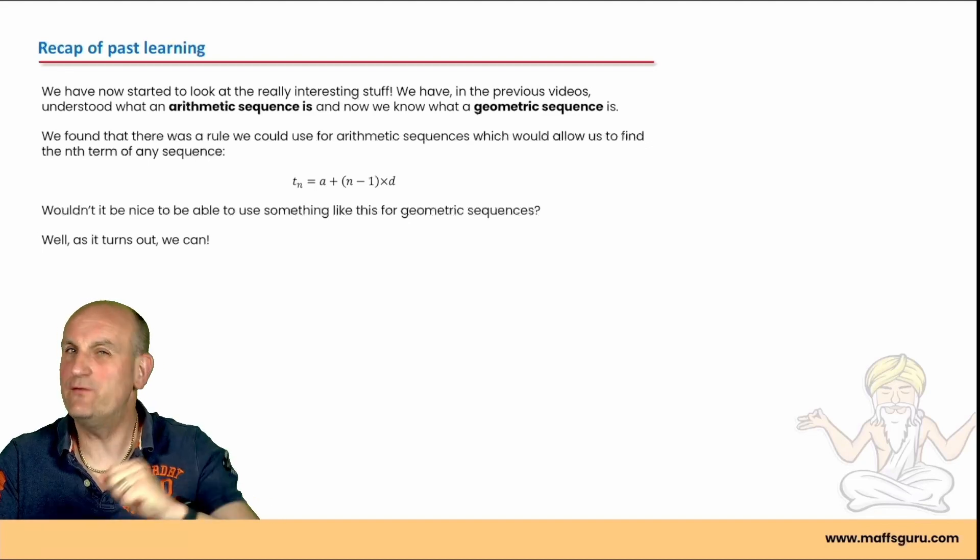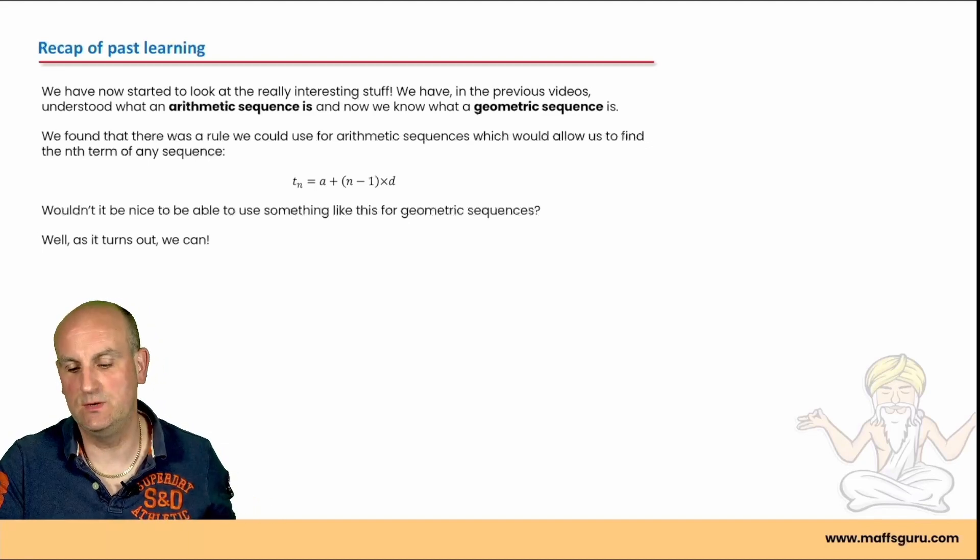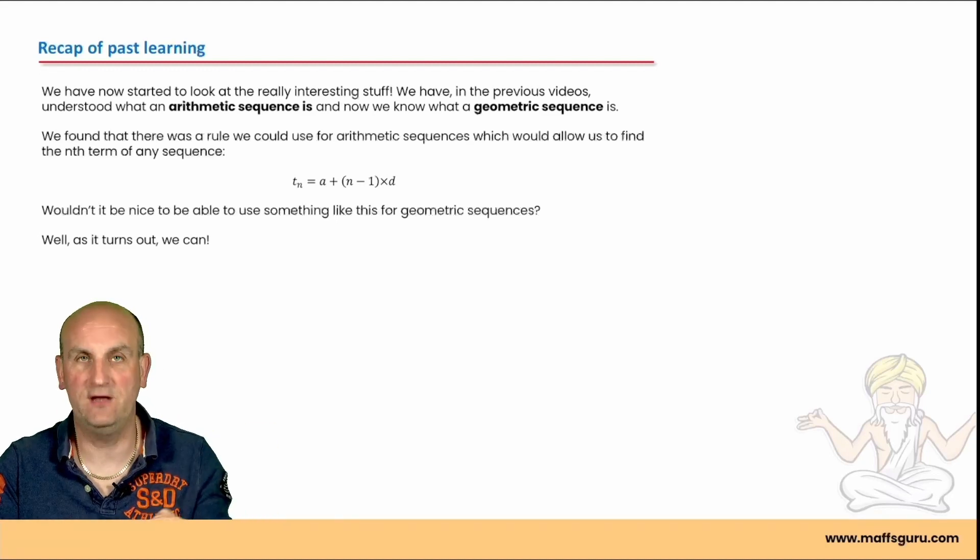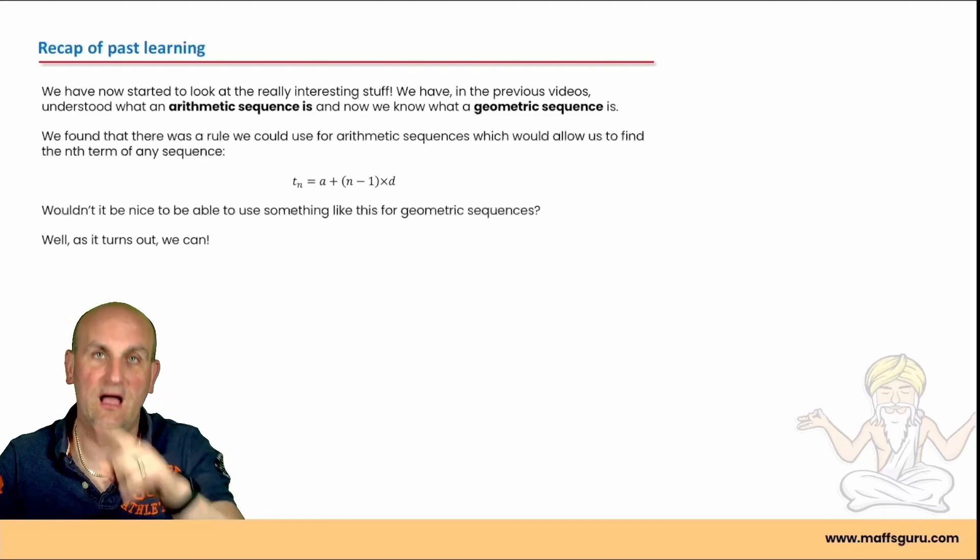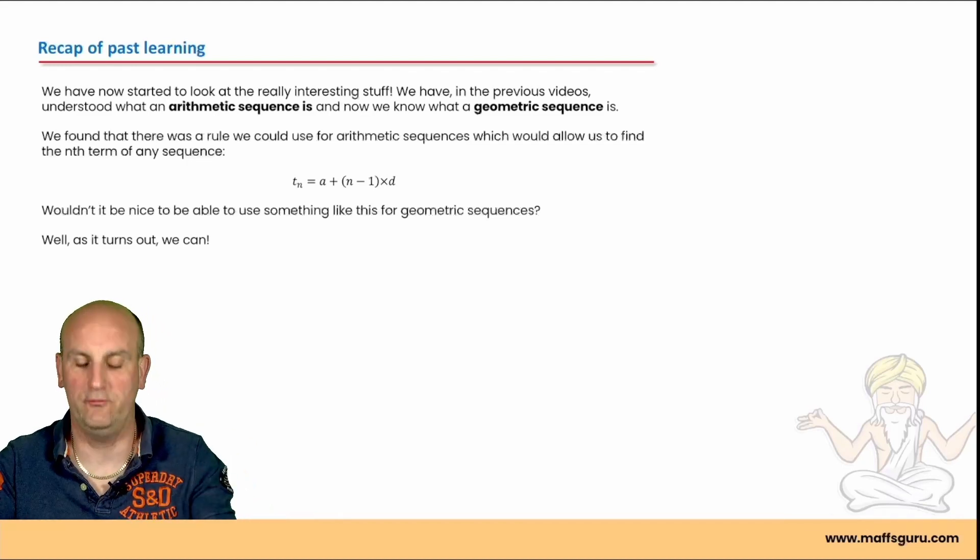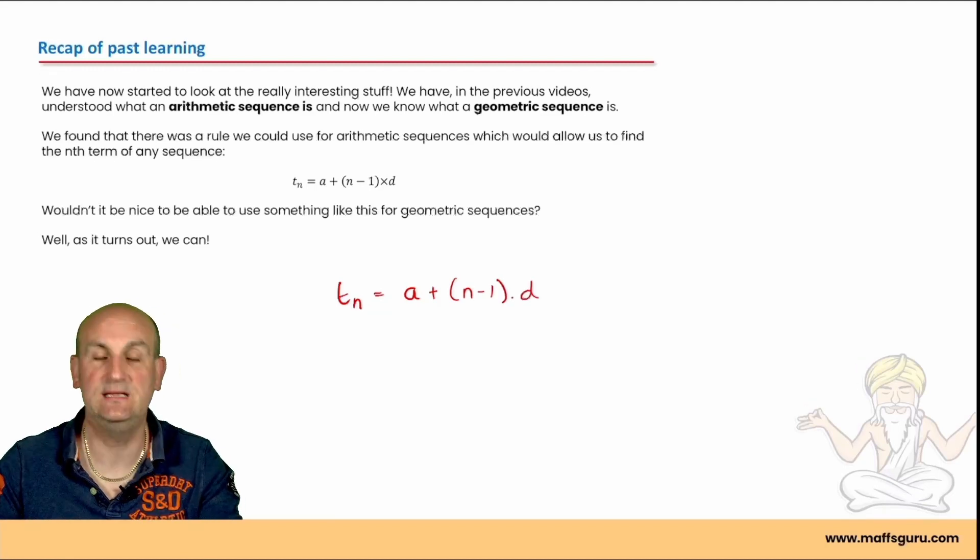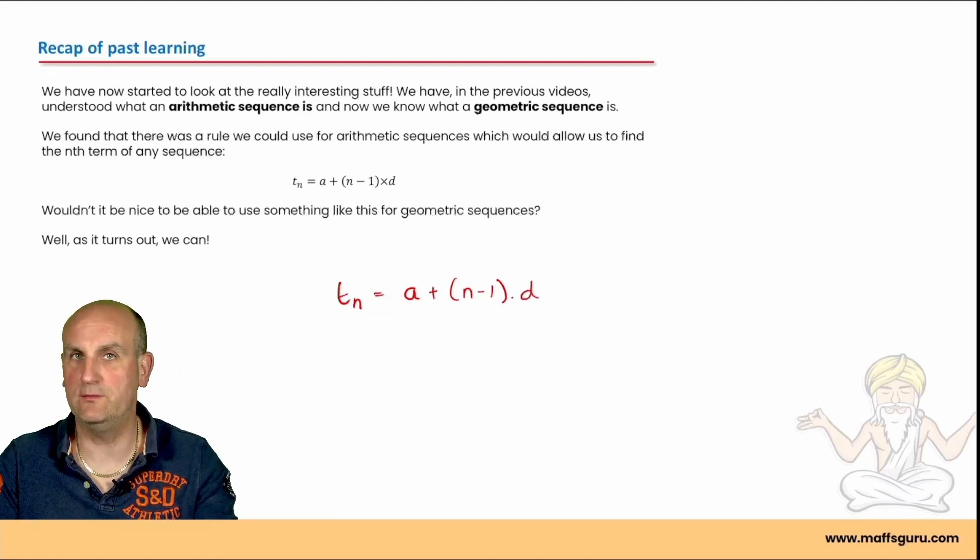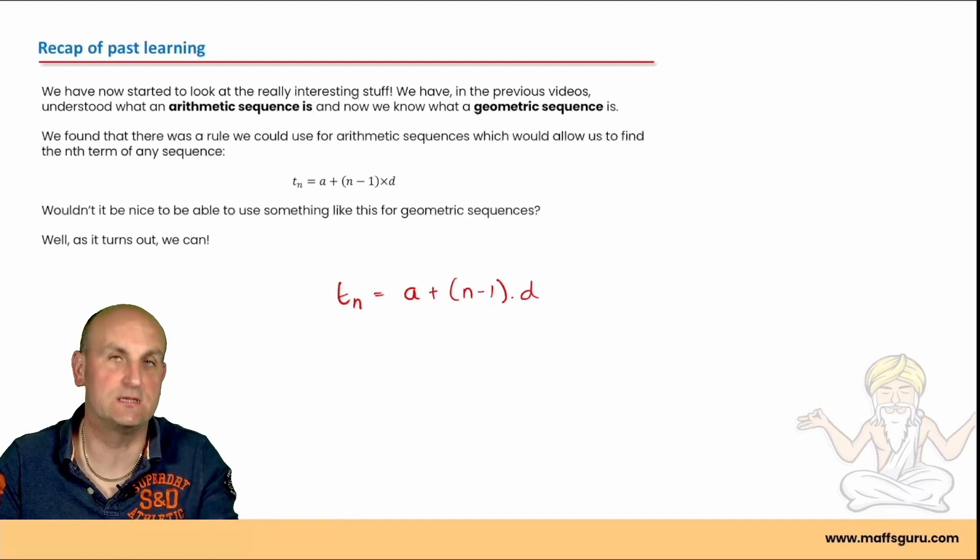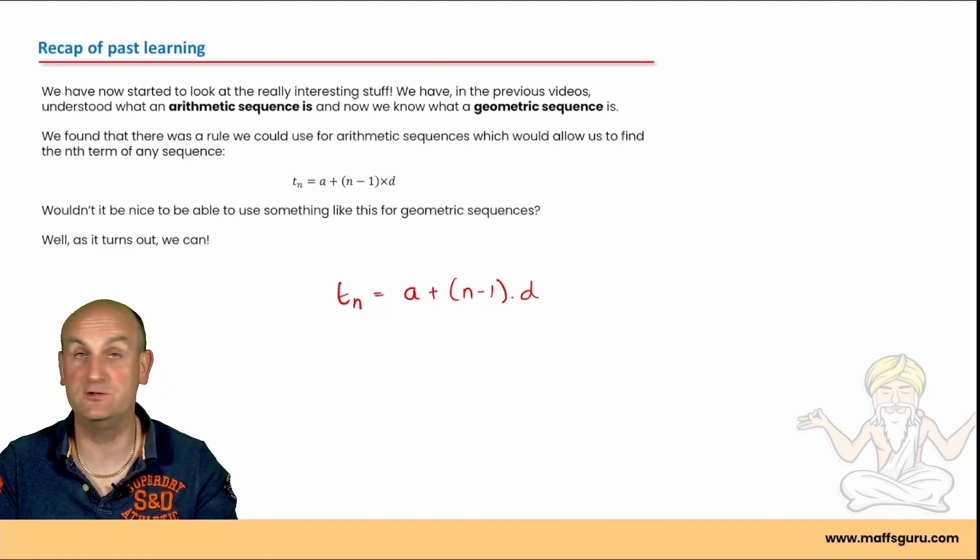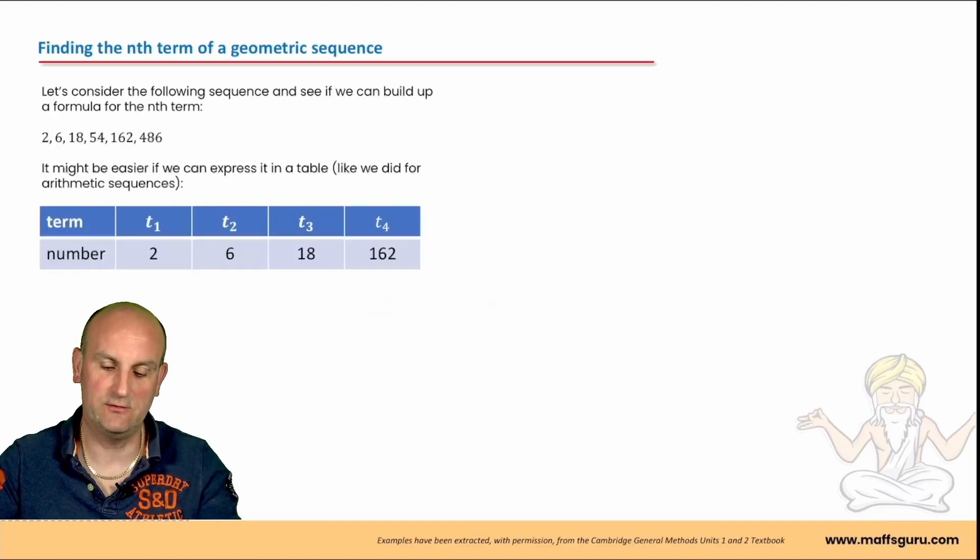Now, in an even earlier lesson, we looked at arithmetic sequences. Although it's nice to have a term to term rule, it would be even better if we could just go to the 50th term or the 100th term without having to add on 3 a hundred times. That's where we got the formula t of n is equal to a plus n minus 1 times d. That was useful because it allowed me to find the 20th term as long as I knew my first term and common difference. Wouldn't it be nice if we could do the same for geometric sequences?